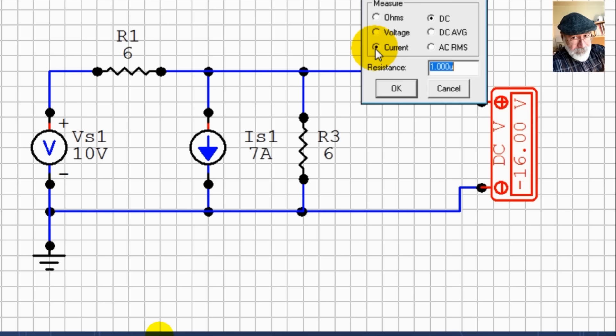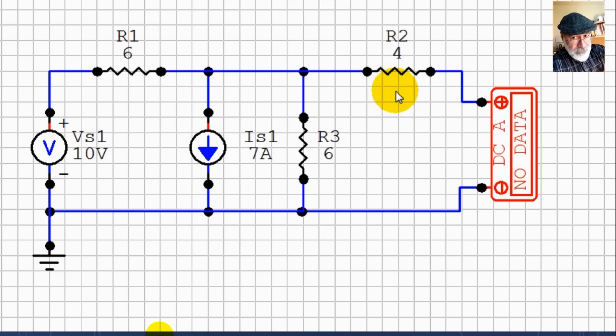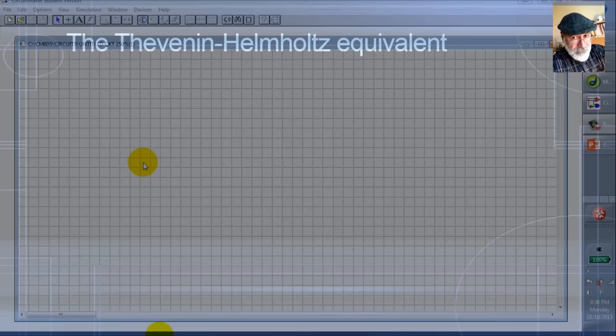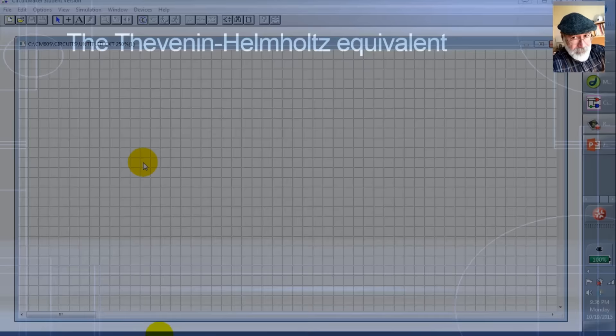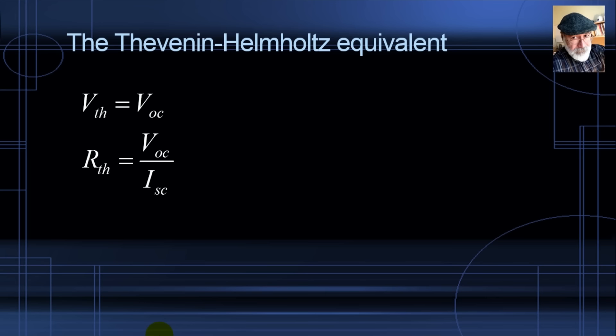Now we replace the voltmeter with an ammeter — current DC, with resistance of one micro-ohm, pretty much like a wire. Running the simulation gives the short circuit current: negative 2.286 amps. With those two values, V_TH equals VOC = −16 V, and R_TH equals VOC divided by I_SC = −16 / −2.286, giving R_TH = 7 ohms. In the equivalent circuit, V_TH is 16 volts (inverted) and R_TH is 7 ohms.